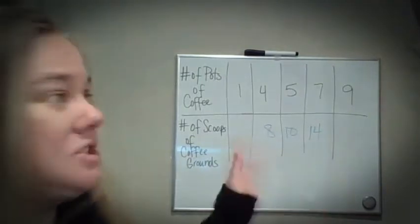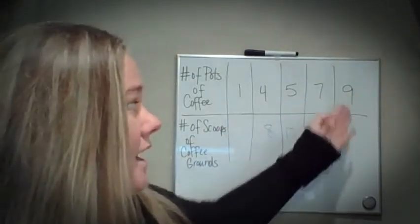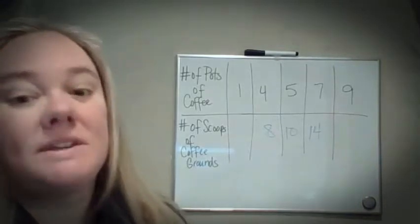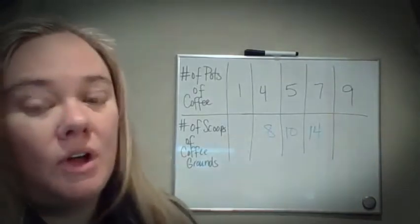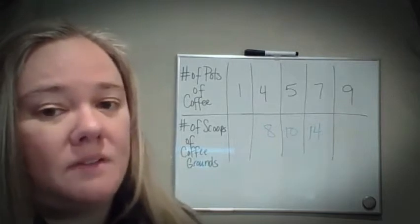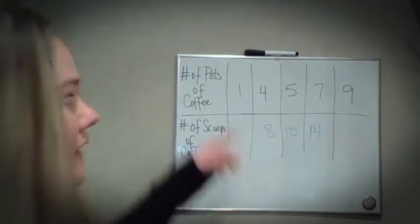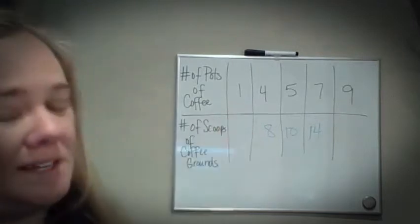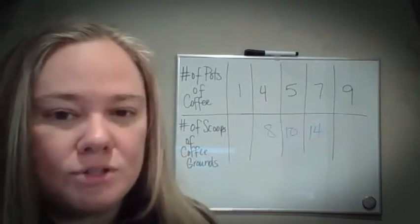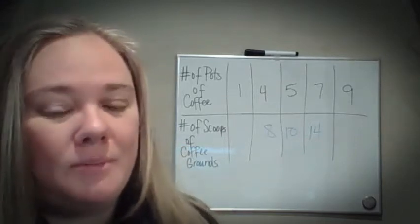Before I just go up to nine pots of coffee, I'm going to say to myself: I need to find for one pot of coffee first. So even if finding for one isn't in your table, you should do that first before you go on from there.